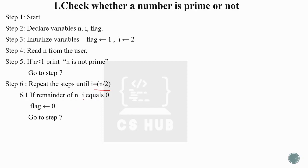For example, if we have number 7, we start dividing by 2. We get a remainder, so we increment i to 3. Then divide by 3, again a remainder. We keep dividing until i exceeds n/2. Since no divisor divides 7 evenly, the flag remains 1, indicating 7 is prime.